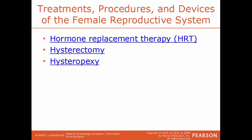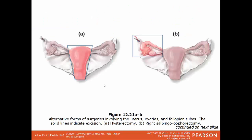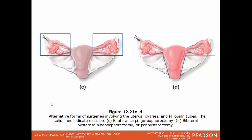Hysterectomy is the surgical removal of the uterus — either the entire structure or only parts of the uterus. Hysteropexy is a surgical procedure to fixate an abnormally movable uterus. Examples of surgeries: A — a hysterectomy, removal of the uterus. B — a right salpingo-oophorectomy, removal of the right ovary and fallopian tube. C — a bilateral salpingo-oophorectomy, where both fallopian tubes and both ovaries are removed. D — a bilateral panhysterectomy, the removal of everything: the uterus, both fallopian tubes, and both ovaries.